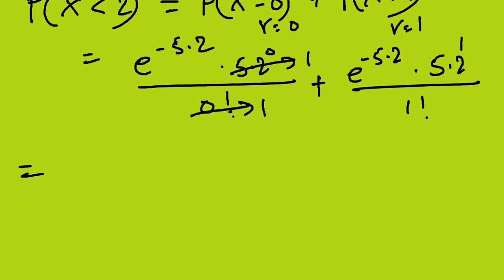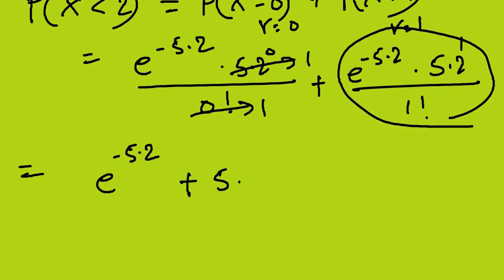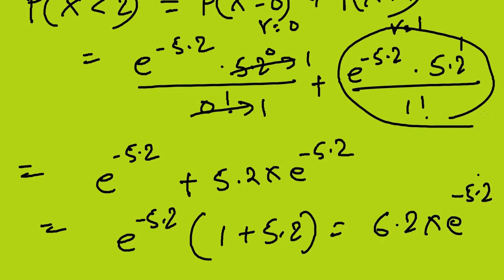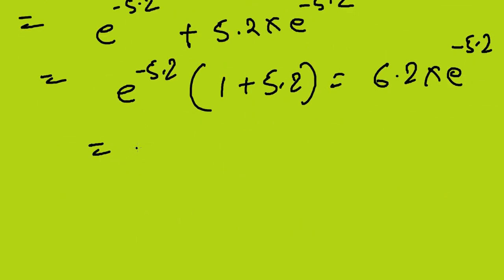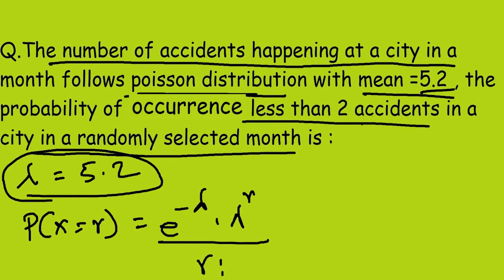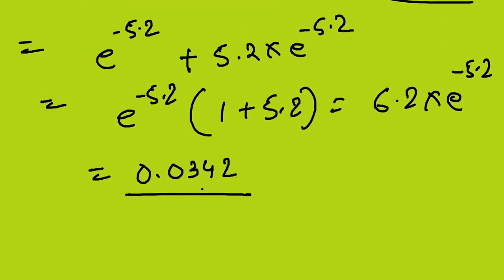The second term becomes 5.2 times e^(-5.2). Taking e^(-5.2) common gives us (1 + 5.2) times e^(-5.2), which equals 6.2 times e^(-5.2). Solving this gives 0.0342. So the probability of less than 2 accidents in a randomly selected month is 0.0342.